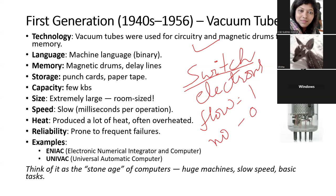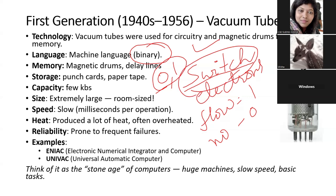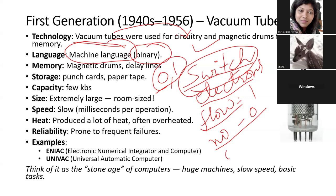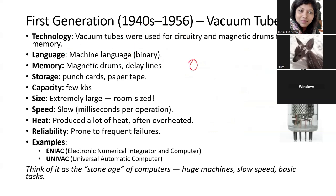In computers, everything is binary — anything stored inside a computer is in terms of zeros and ones. The vacuum tube acted like a switch: when there is flow of electrons it is one, and when there is no flow it is zero. These vacuum tubes were used to build the circuits of first generation computers. The language used was machine language, because the computer internally understands only zeros and ones.